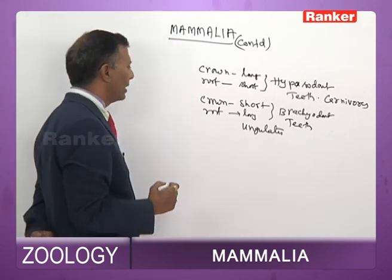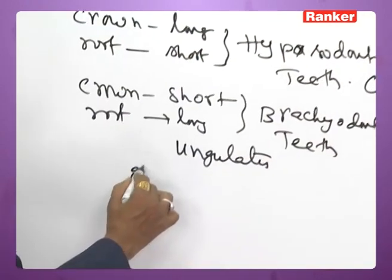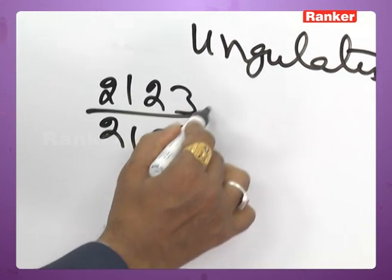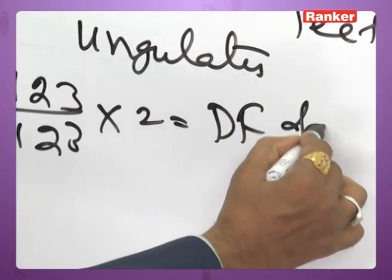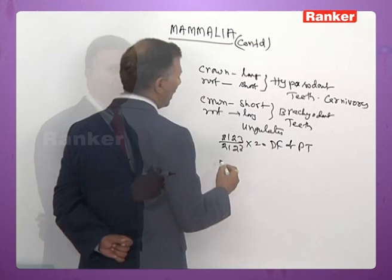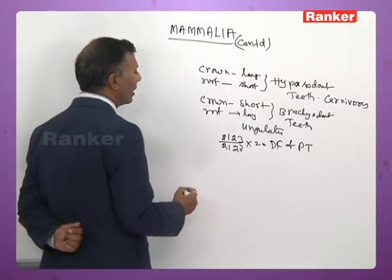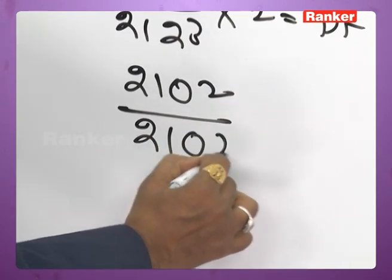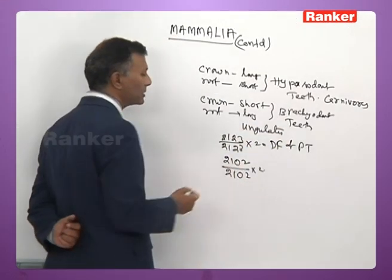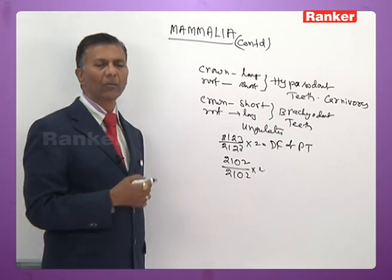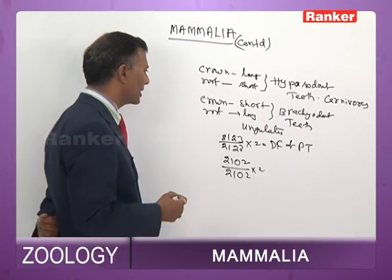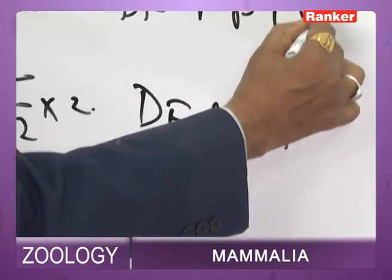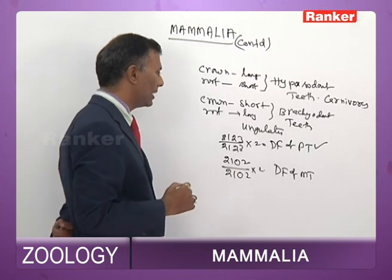In human beings, the dental formula of permanent teeth is 2,1,2,3 / 2,1,2,3 × 2. The dental formula of milk teeth is 2,1,0,2 / 2,1,0,2 × 2 — premolars are entirely absent and instead of 3 molars, only 2 molars are present.